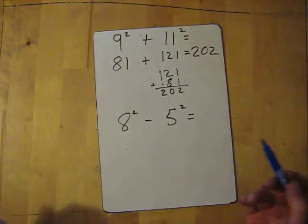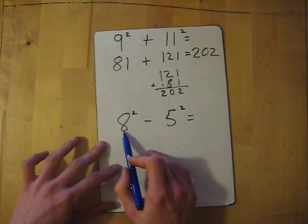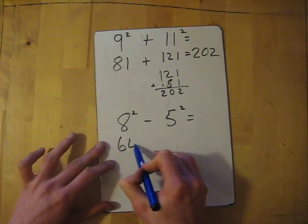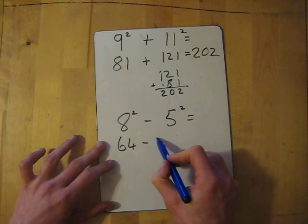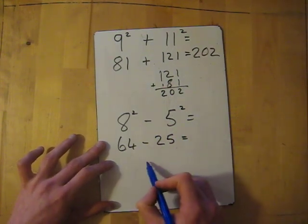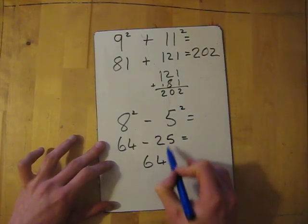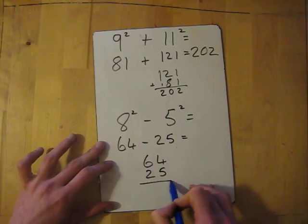Now this one here, again square the numbers first. So 8 squared, 8 times 8 is 64, take away 5 squared. 5 times 5 is 25. And again I'm going to do my column subtraction: 64 minus 25.